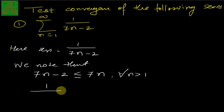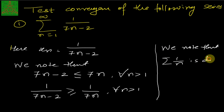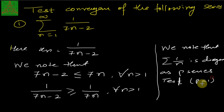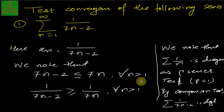Taking the reciprocal, the inequality is reversed: 1/(7n − 2) ≥ 1/(7n). We note that summation of 1/n is divergent by the p-series test with p = 1. Since the smaller series is divergent, the bigger one is also divergent. Therefore by the comparison test, the summation of 1/(7n − 2) is divergent.